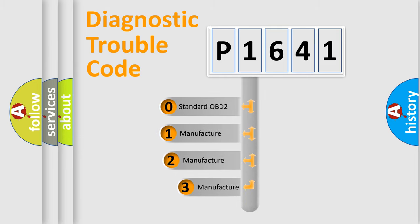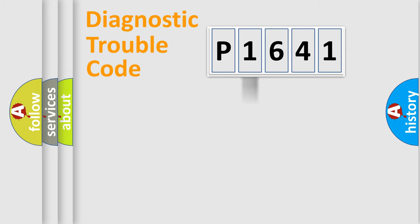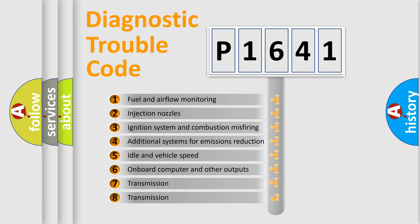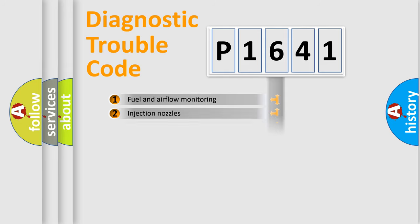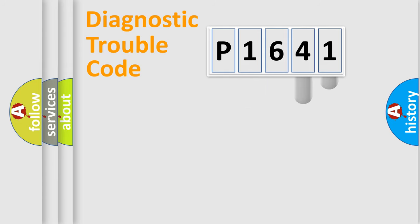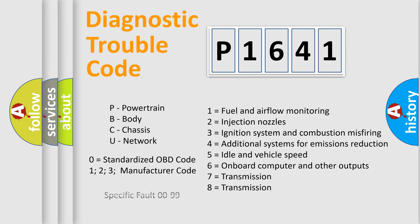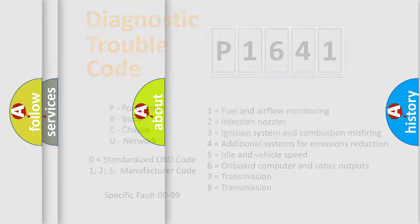If the second character is expressed as zero, it is a standardized error. In the case of numbers 1, 2, or 3, it is a more specific expression of a car-specific error. The third character specifies a subset of errors. This division is valid only for the standardized DTC code, and only the last two characters define the specific fault of the group.